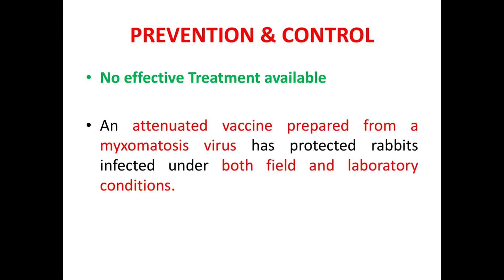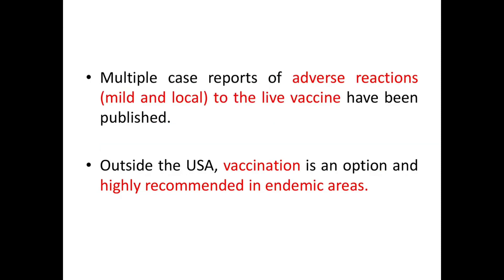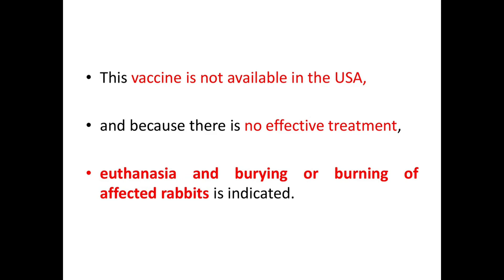Coming to prevention and control: no effective treatment is available. An attenuated vaccine prepared from myxomatosis virus has protected rabbits under both field and laboratory conditions. Multiple case reports of adverse reactions — mild and local — to the live vaccine have been published. Outside the USA, vaccination is an option and highly recommended in endemic areas. This vaccine is not available in the USA, and because there is no effective treatment, euthanasia and burying or burning of affected rabbits is indicated.